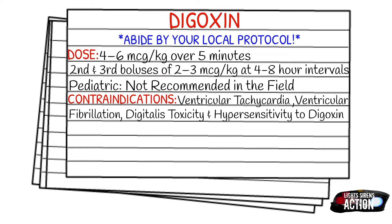Before we get into dosages, make sure you abide by your local protocol and stay within your scope of practice. The dose is going to be four to six micrograms per kilogram over five minutes, and the second and third boluses are two to three micrograms per kilogram at four to eight hour intervals. For pediatrics, it is just not recommended out in the EMS field.